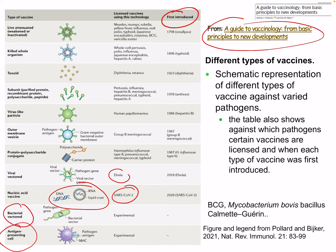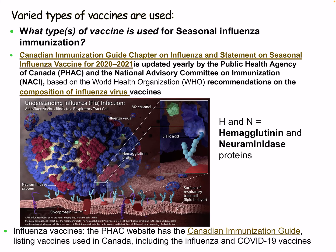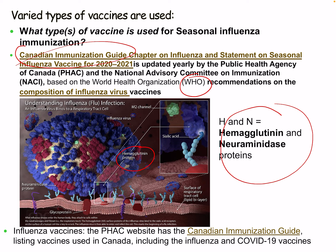One recent example is the Ebola vaccine, which uses a viral vector with a pathogen gene. For another example, here is the Canadian immunization schedule for influenza, updated every year by the Public Health Agency based on WHO recommendations. Influenza vaccines are based on the hemagglutinin (H) and neuraminidase (N) proteins, but these mutate very rapidly so we have to change the vaccine quite frequently.